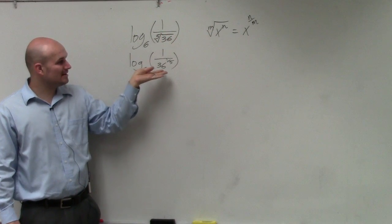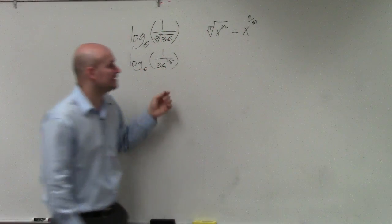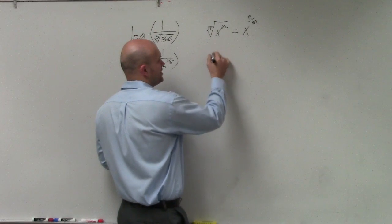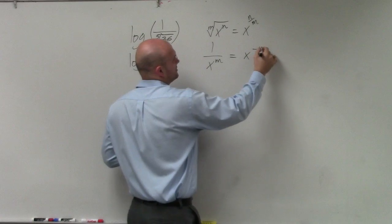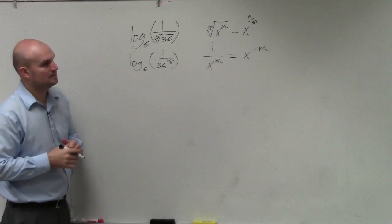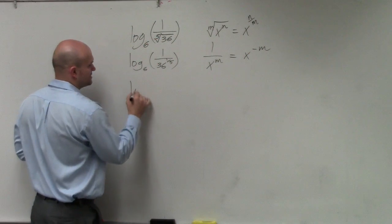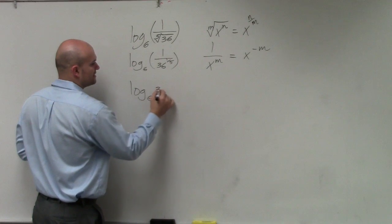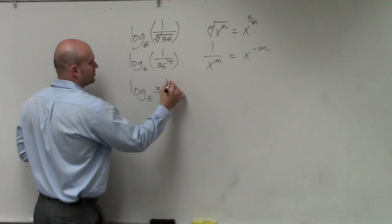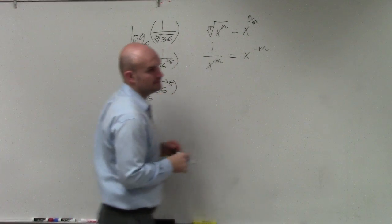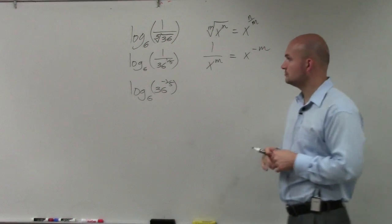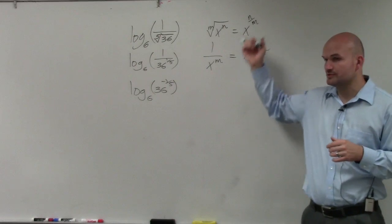Next thing, we don't like numbers in the denominator, especially when we're trying to simplify. So remember, 1 over x to the m is equal to x to the negative m. All right, so I can rewrite this as log base 6 of 36 to the negative 1-fifth power. Does everybody follow my rules so far? Just following rules that we know.